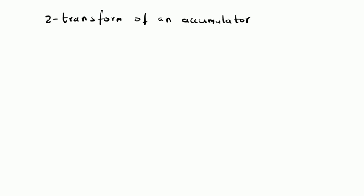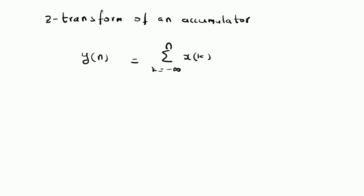This accumulator system is defined by the system function y of n equal to the summation k is equal to minus infinity to n of x of k. So that means it adds all the values from the beginning of time to the current point or current time. This is the accumulator.